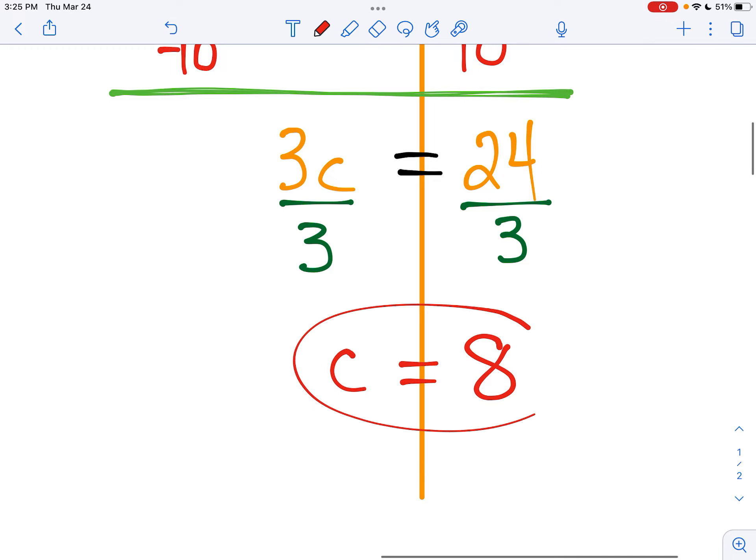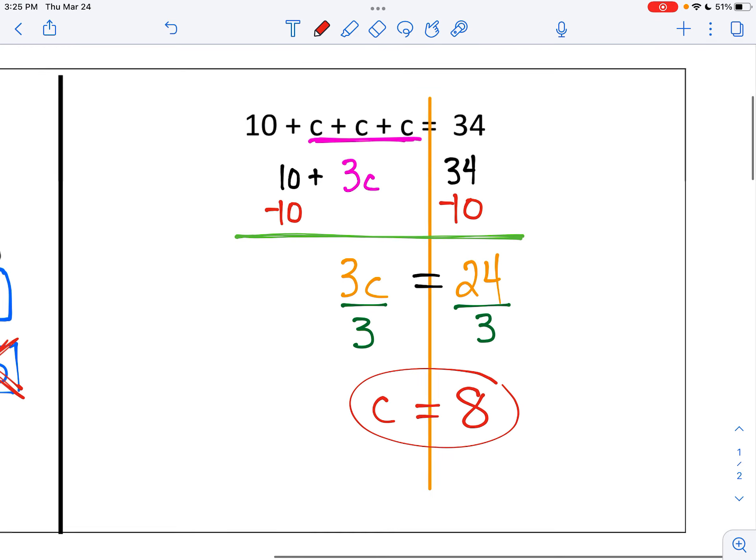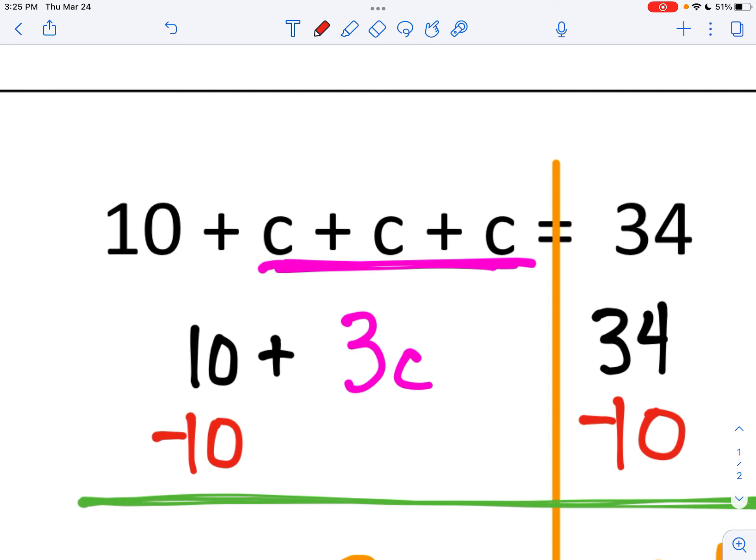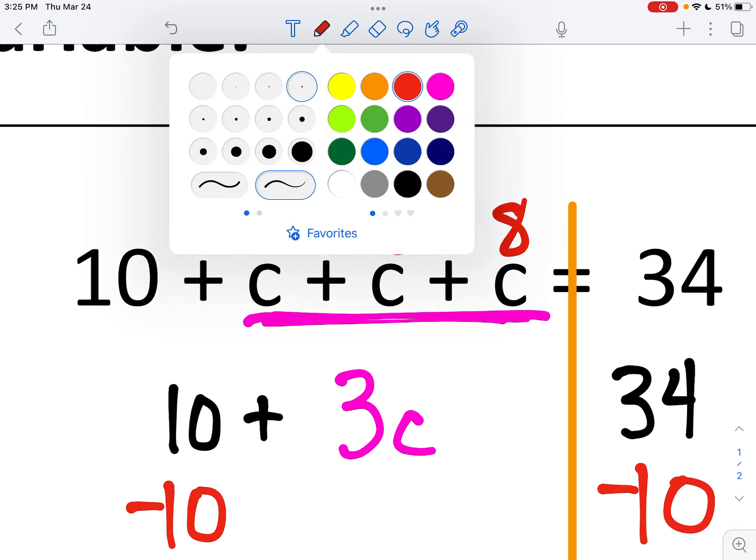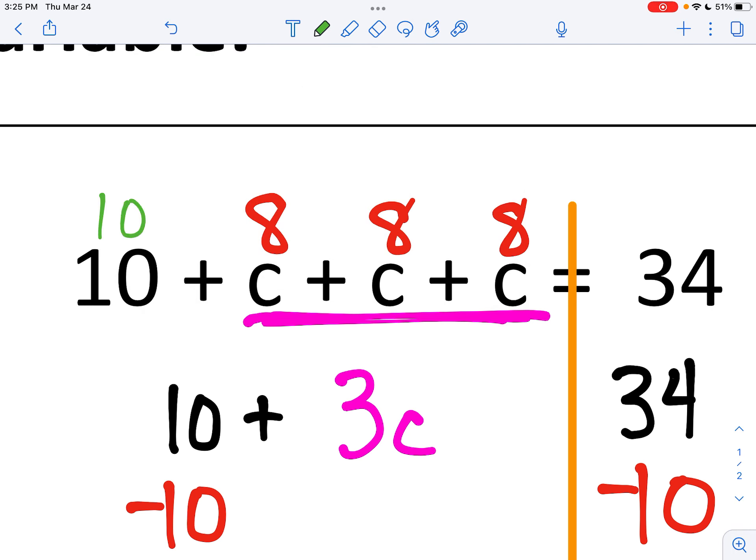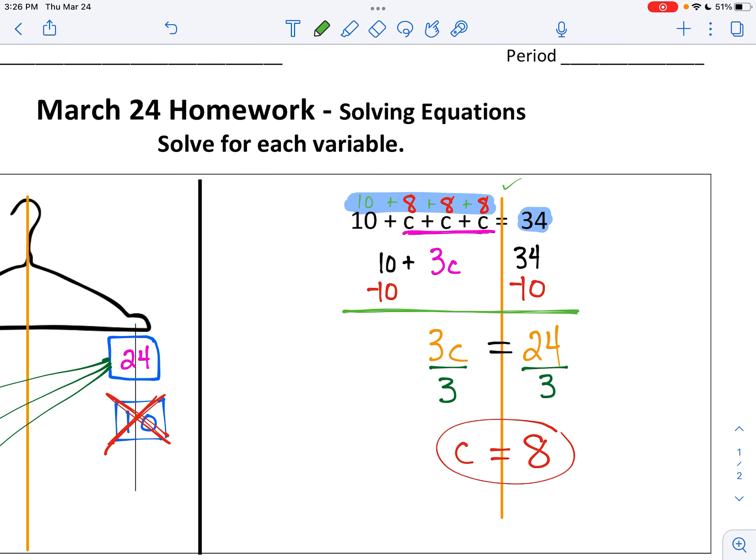This is probably the answer. I will know it's the answer when I go back up to the top and I write eight, eight, eight above the C's. And then I repeat 10 plus, plus, plus. When I put all of this in my calculator, it needs to equal this amount. 10 plus 8 plus 8 plus 8 equals 34. So I have checked it over. Yes. When I replace C with eight, it balances. It makes the same number.